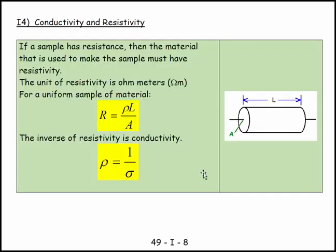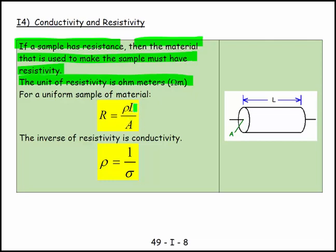Two different ways of looking at materials electrically. What we say is that if a sample has resistance then the material that is used to make the sample must have resistivity. And the unit of resistivity is the ohm meter. And the equation that gives us this relationship is the resistance of the sample is equal to the resistivity of the material times the length of the material and the cross-sectional area of the material. Assuming it's got roughly this kind of columnar shape. So that's an important equation.